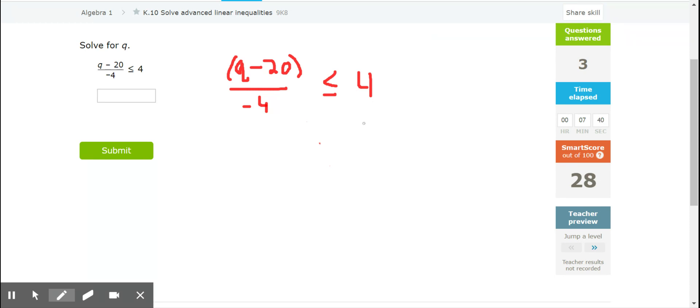Well, when we solve, we go in reverse order of operations. So I know this is subtraction. We normally back that out first, but it's in parentheses, so we're going to save that for the end. So we're going to back out the division by negative 4. And we undo division by negative 4 by multiplying by negative 4.